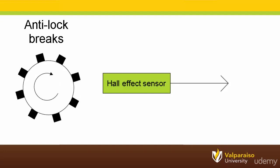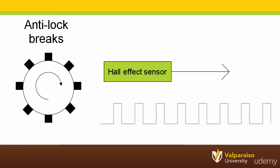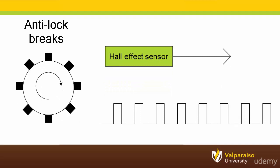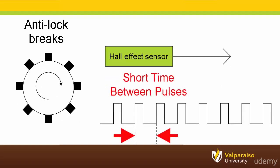Therefore, when the car is going fast, the signal coming out of the Hall Effect Sensor may look something like this. Because the wheels are spinning fast, there is a relatively short time between the pulses from the Hall Effect Sensor.